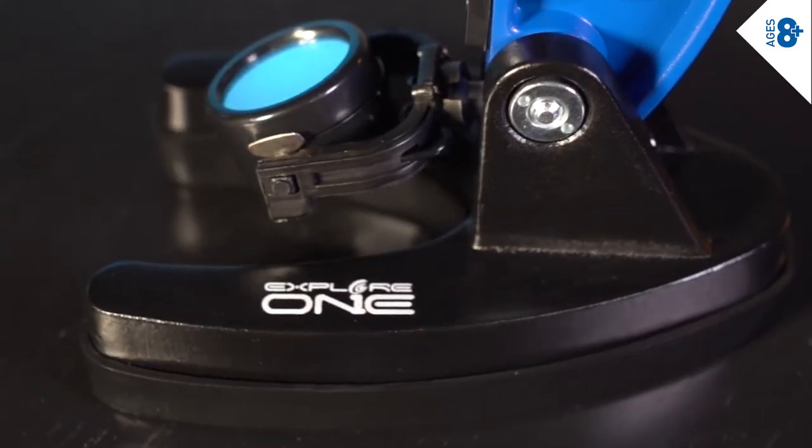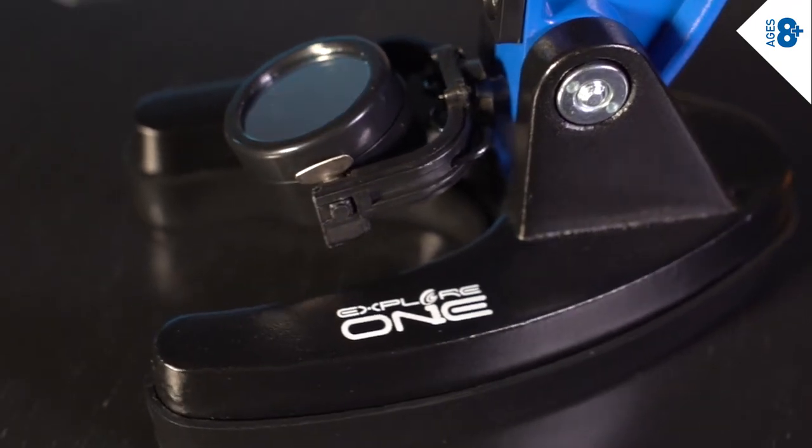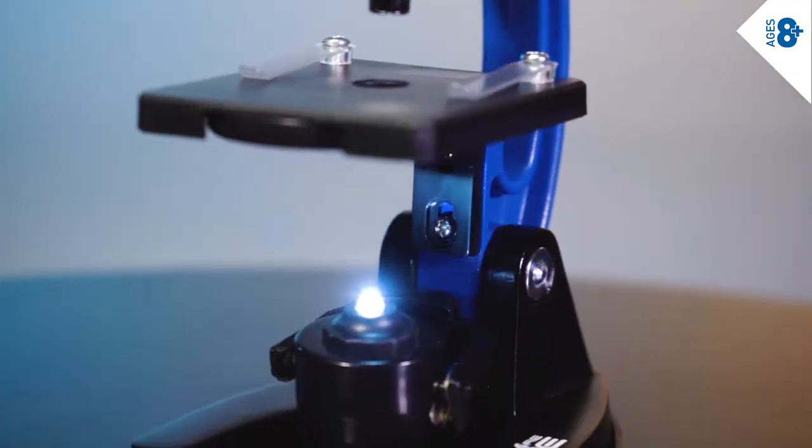The reversible illuminator combines a flat mirror for using ambient light and a white LED for illumination where you need it.